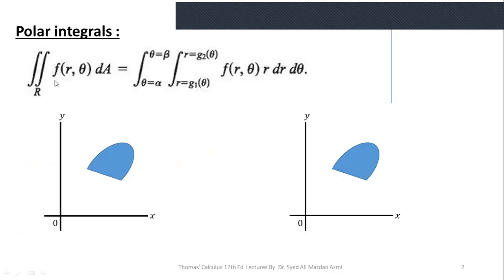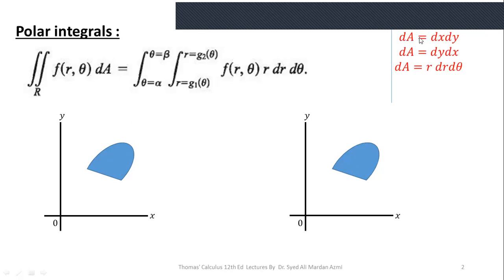This is how a polar integral should look: a double integral over the region R of f(r, θ) dA. This double integral is given in terms of r and θ. For calculating limits, note that in the Cartesian system dA = dx dy or dA = dy dx, but in polar coordinates we always take dA = r dr dθ.